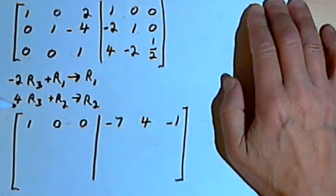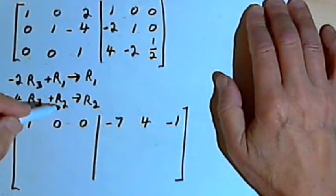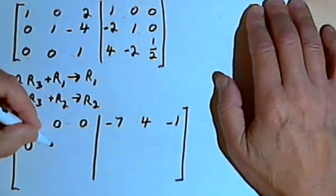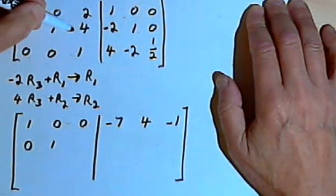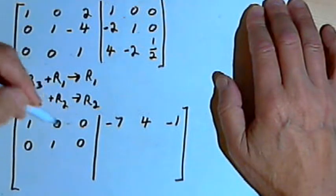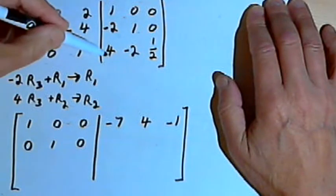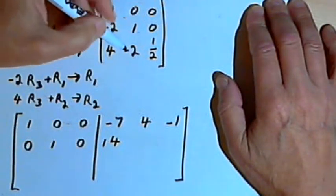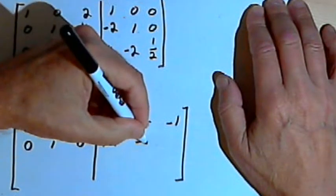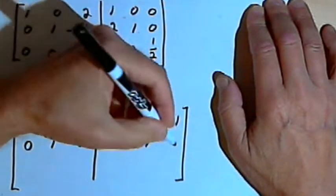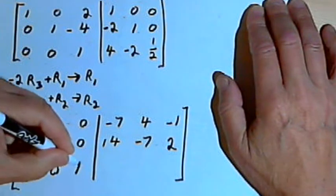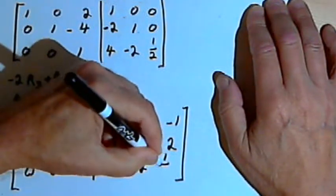Now working on the second row: I multiply 4 times row 3 and add it to row 2 for the new row 2. 4 times 0 plus 0 is 0. 4 times 0 plus 1 is 1. 4 times 1 is 4, added to negative 4 gives 0. 4 times 4 is 16, added to negative 2 gives positive 14. 4 times negative 2 is negative 8, added to 1 gives negative 7. 4 times 1 half is 2. Copying the third row: 0, 0, 1, 4, negative 2, and 1 half.